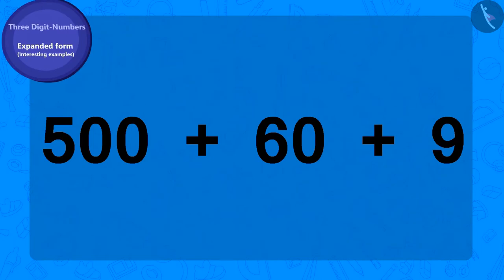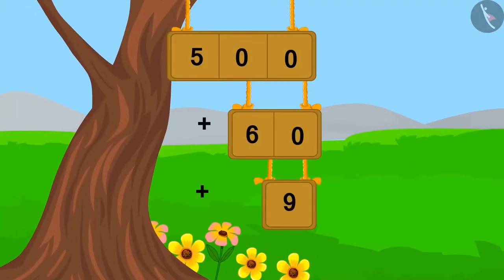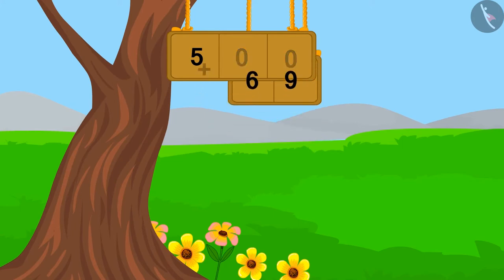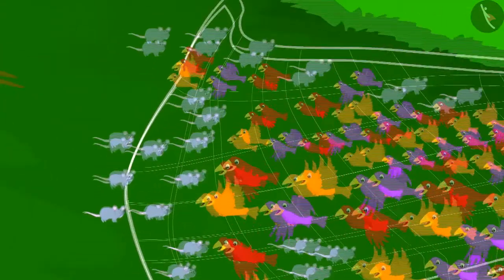This is the total number of rats gathered there. Can you tell the number name of this number written in expanded form? First, let's write this number in expanded form with the help of the method that we learned in the previous video. Now, we will write this number as a number name. 569. This was so easy, isn't it?